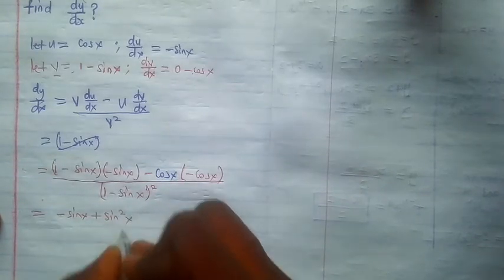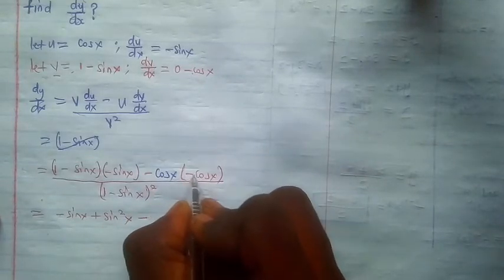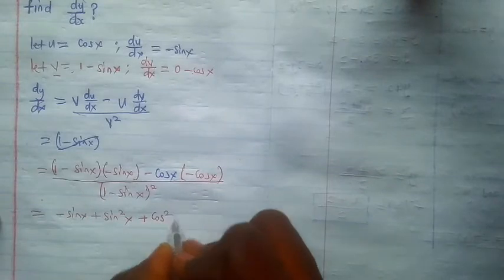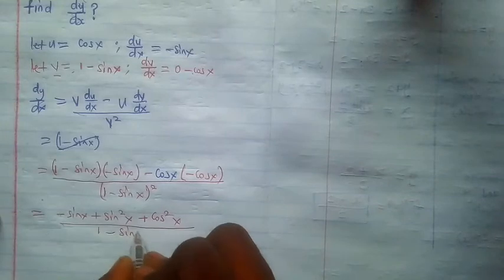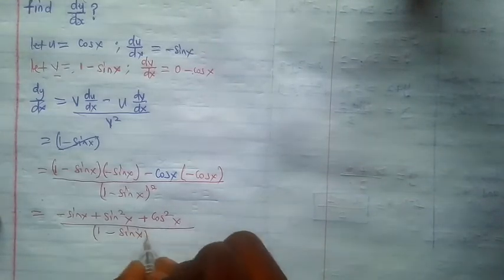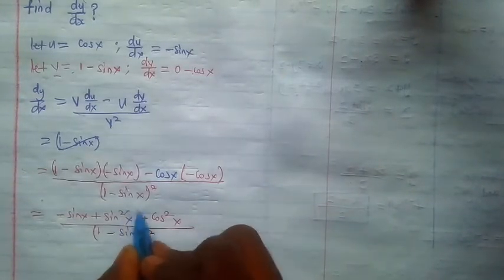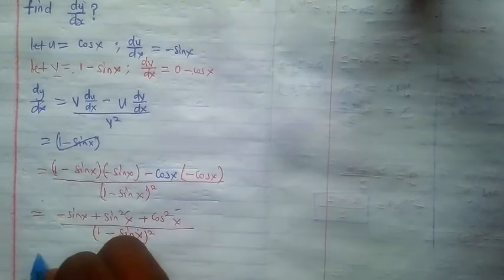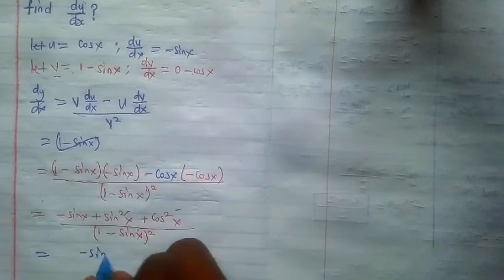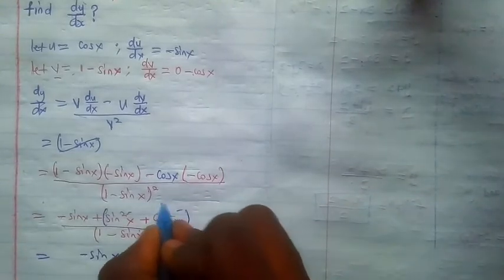We have negative sine x times 1—negative sine x. Negative sine x times negative sine is positive sine squared x. Minus negative cosine x times negative cosine x is just positive cosine squared x, over 1 minus sine x squared. Now recall that sine squared x plus cosine squared x is equal to 1.